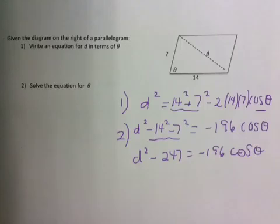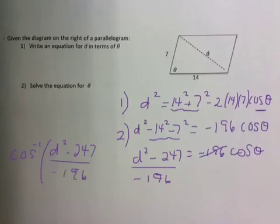All right, now we need to divide both sides by negative 196, and so our final answer is we're going to have to take the inverse cos of both sides. So inverse cosine of d squared minus 247 over negative 196 equals theta. So that's your answer.